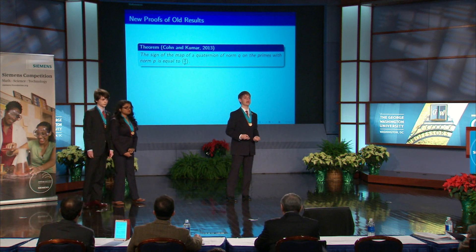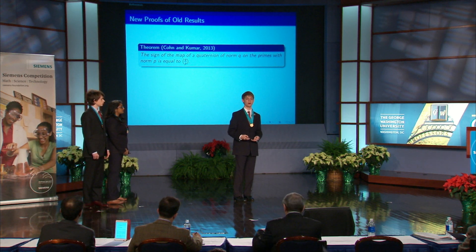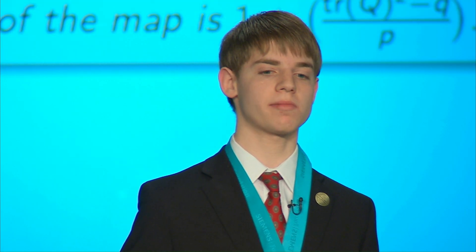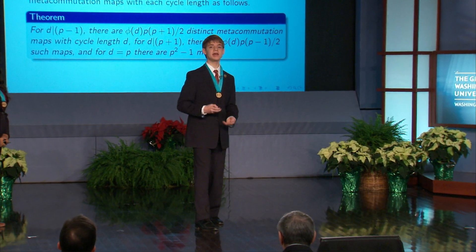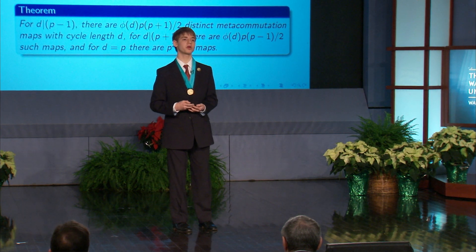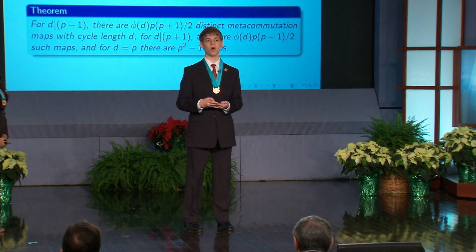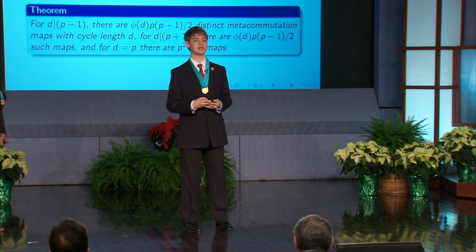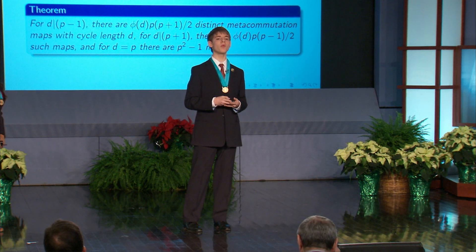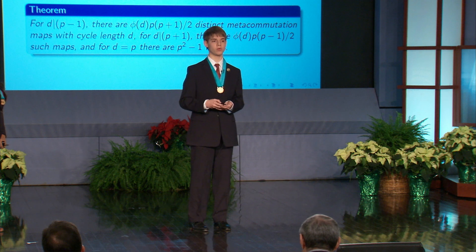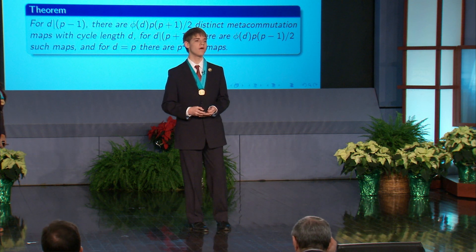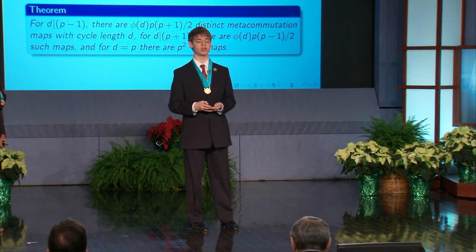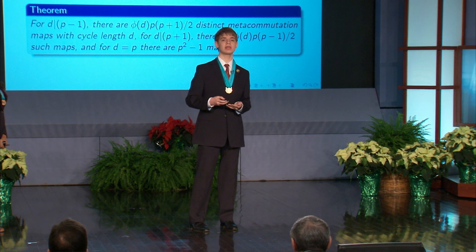Using this characterization, we obtain new, simpler proofs of the old results of Cohn and Kumar — including an essentially one-line proof that the sign of the map is the quadratic character of q on p, and a formula for the number of fixed points. We also obtain new results about metacommutation regarding cycle lengths, which had not previously been studied. All cycles in the permutations that are not fixed points must have the same order. Furthermore, we can characterize exactly how many cycles have each length: for d dividing p minus 1, there are phi(d) times p times (p plus 1) over 2 such permutations; for d dividing p plus 1, there are phi(d) times p times (p minus 1) over 2; and for d equal to p, there are p-squared minus 1, where phi denotes the Euler-phi function.